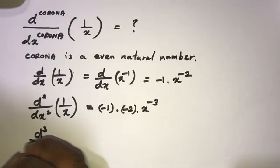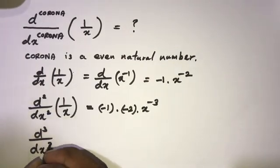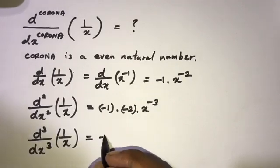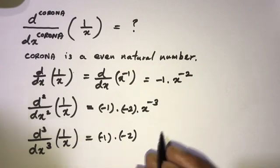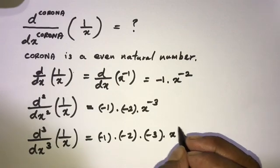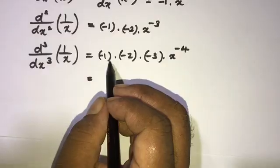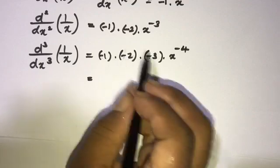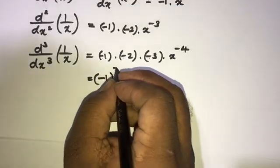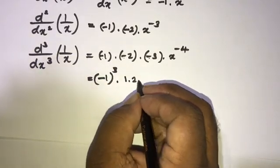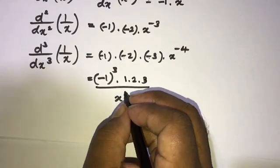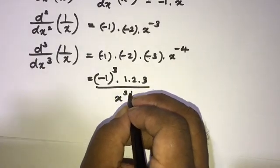Differentiating again with respect to x gives minus 1 times minus 2 times minus 3 times x to the minus 4 power. We can rewrite this as minus 1 to the 3rd power times 1 times 2 times 3, over x to the 3 plus 1 power.